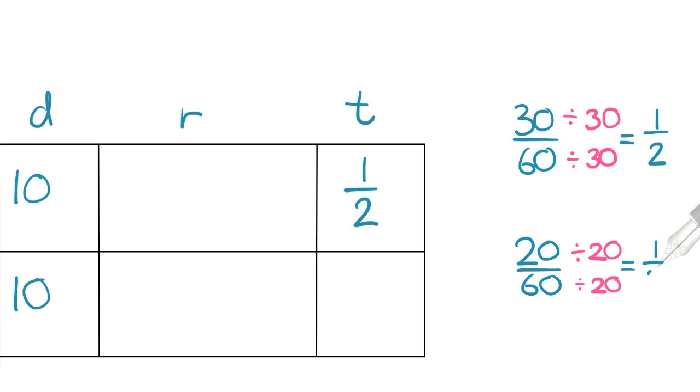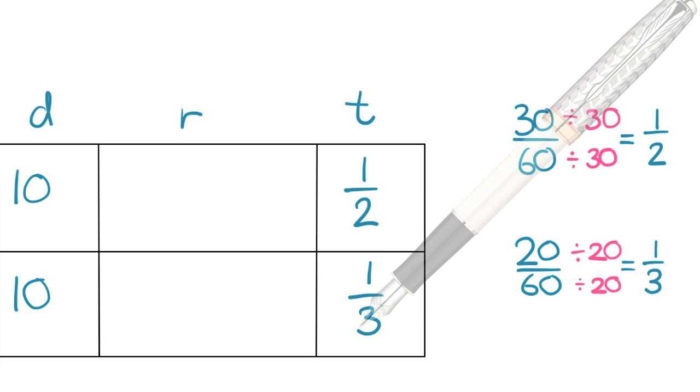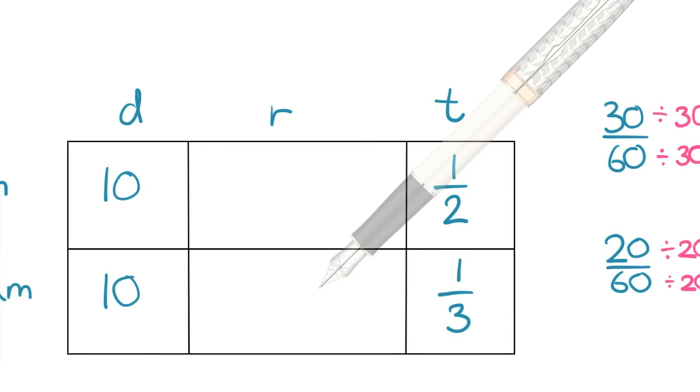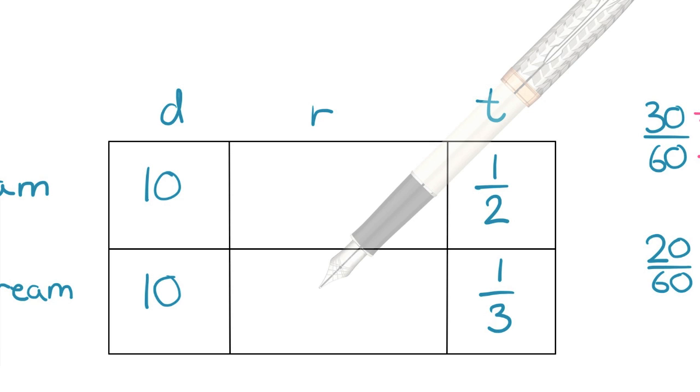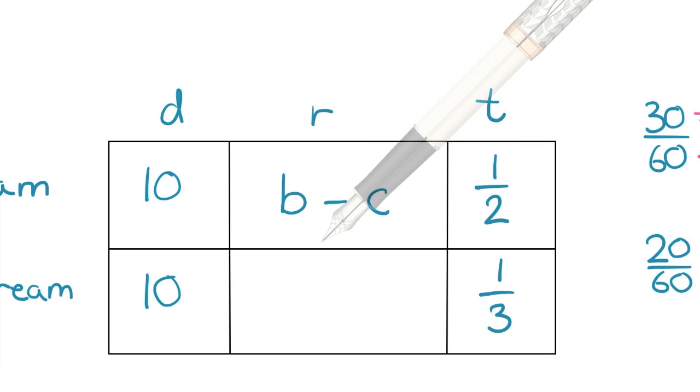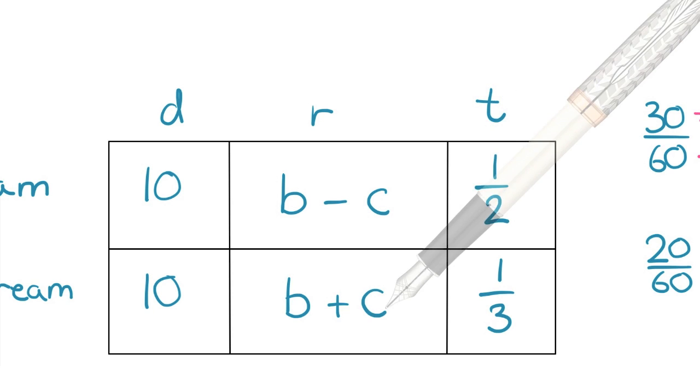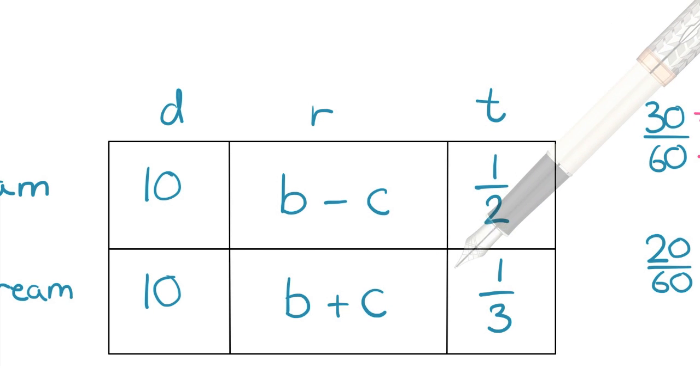We need to take note of the rates of the object in motion. A boat going upstream—its speed is decreased because it moves against the current. The total speed is b minus c, or the speed of the current is subtracted from the speed of the boat. A boat going downstream—its speed is increased because it moves with the current. The total speed is b plus c, or the speed of the current is added to the speed of the boat.